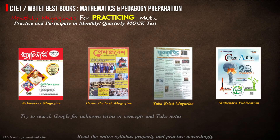Achievers, Pesa Popes, and Jubokisti are the best monthly magazines available in Bengali for GK, Environment, Science, Social Science, Mathematics, and Mock Tests. Must try to buy these and practice mock tests in mathematics.